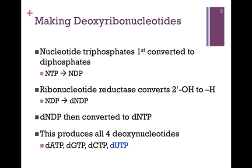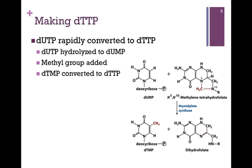Remember, we began with ribonucleotide triphosphates. But deoxy UTP is not incorporated into DNA — instead, we incorporate deoxy TTP. Deoxy UTP is actually rapidly converted to deoxy TTP. We first take the deoxy UTP and hydrolyze it to the monophosphate form.